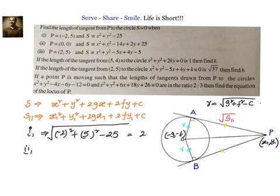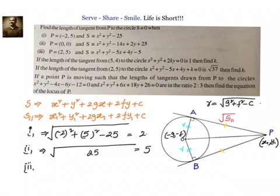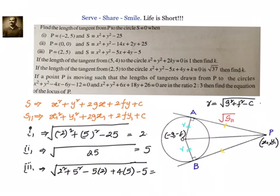For the second part, the point is (0, 0). Substituting 0 for x and y, all those terms become 0, leaving √25 = 5. For the third part, P is (2, 5). Substituting: 2² + 5² − 5(2) + 4(5) = 4 + 25 − 10 + 20 = 39 − 5 = 34. So the length of tangent is √34.